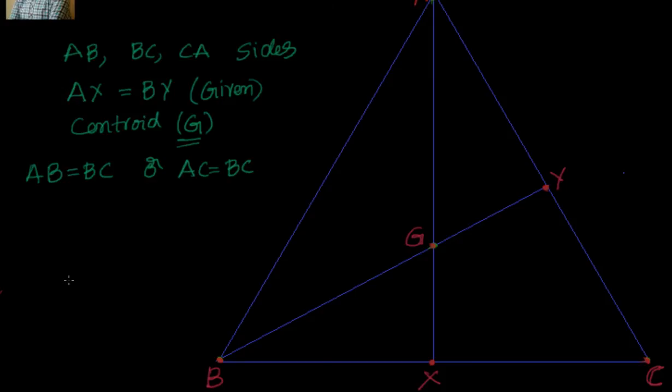We have to prove that either AB equal to BC or AC is equal to BC. Let's again go through that. If two medians of a triangle are equal, then prove it is an isosceles triangle.